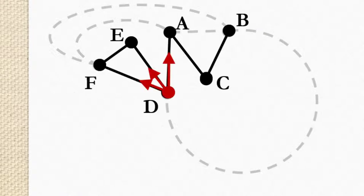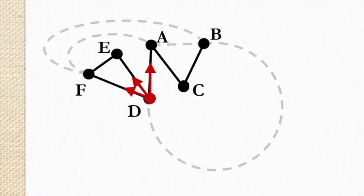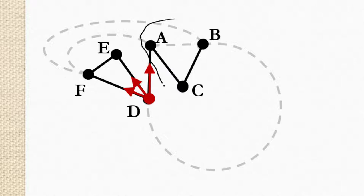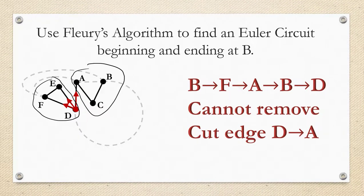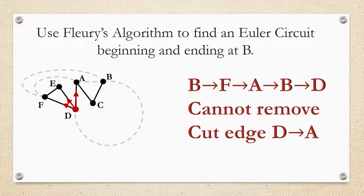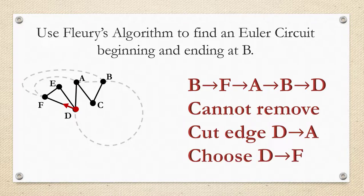From D we can go towards A or E or F. But notice if we were to remove the edge D, A we would separate the graph into two components. We would have the component A, B, C and then we would have the component D, E, F. So D, A is actually a cut edge and we're not allowed to remove cut edges unless there is no option. So we can either remove D, E or D, F. I chose D, F.